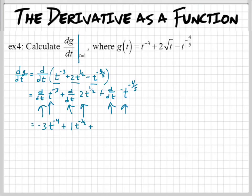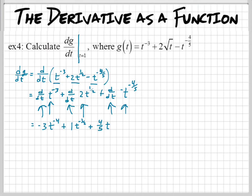Then we have this last term. We're going to drop the negative 4/5 and multiply it by the negative 1 that's in front of it. What's negative 1 times negative 4/5? That's 4/5. Now for the exponent, I need to take negative 4/5 and subtract 1 — which is 5/5 — and that gives us negative 9/5.